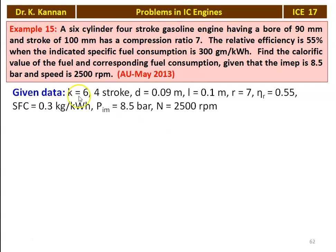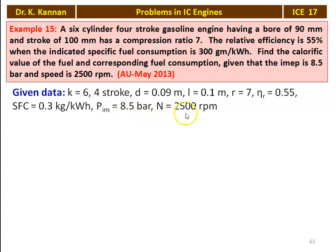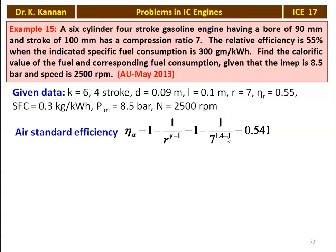The given data: number of cylinders equal to 6, it is a 4-stroke cycle engine, diameter equal to 0.09 meter, stroke length equal to 0.1 meter, compression ratio R equal to 7, relative efficiency is 0.55, specific fuel consumption is 0.3 kilograms per kilowatt hour, indicated mean effective pressure is 8.5 bar, speed equal to 2500 RPM. We calculate the air standard efficiency: η_A = 1 − 1/R^(γ−1) = 1 − 1/7^0.4 = 0.541.